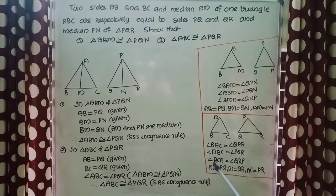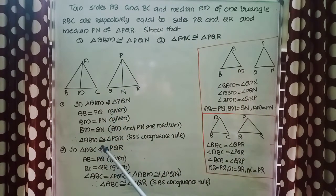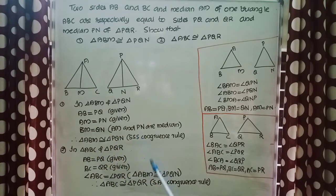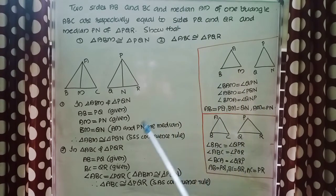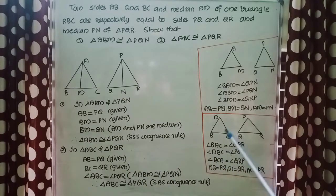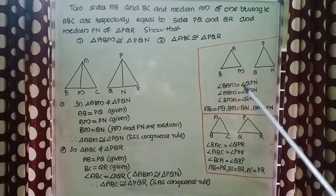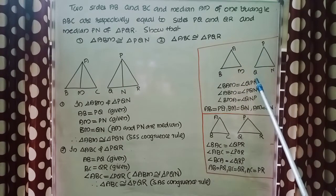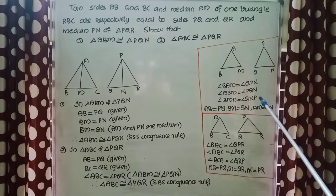From the question, AB equals PQ is given, so we can write AB equals PQ. BC equals QR is also given in the question. We need one more condition, which we can take from the above result since we have already proved triangles ABM and PQN are congruent, so all their corresponding parts are true.